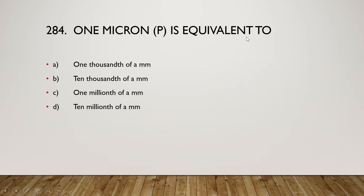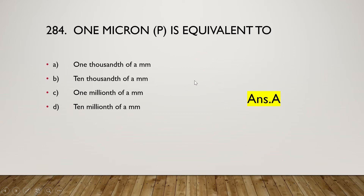The next question is: one micron is equivalent to (A) one thousandth of a millimeter, (B) ten thousandth of a millimeter, (C) one millionth of a millimeter, or (D) ten millionth of a millimeter. The right answer is option A — one thousandth of a millimeter. One micron equals 10 to the power of minus 6 meters.